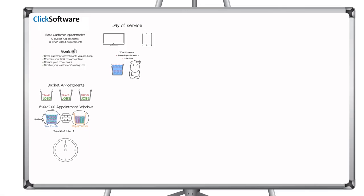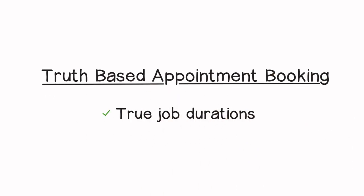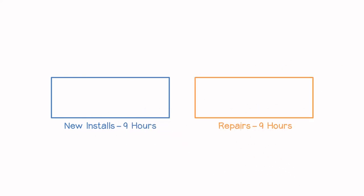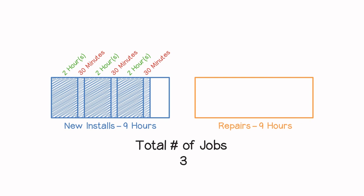This brings us to the second approach: truth-based appointment booking, where appointments are booked based on true job durations and true travel times against the existing schedule. Let's look at the same 8 to 12 appointment window. We have the same nine hours for install and nine hours for repair. If the install takes an average of two hours and the average travel time is 30 minutes, you would expect to schedule three new installs.